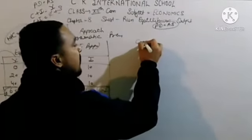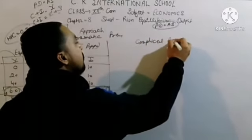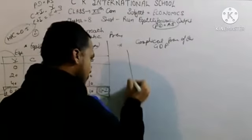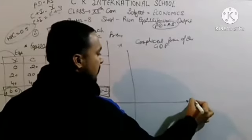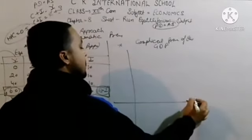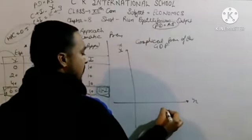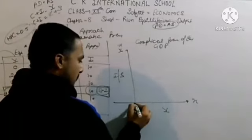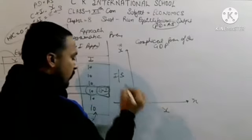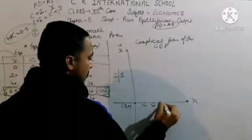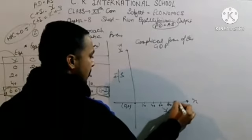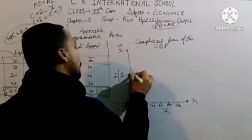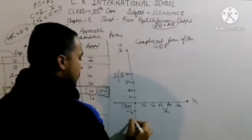Now we move to graphical presentation of equilibrium GDP. On the x-axis we take level of income, and on the y-axis we take both I and S. Income values: 20, 40, 60, 80, 100. Saving values on the y-axis: 10, 20, 30, 40, and negative values: minus 10, minus 20, minus 30.